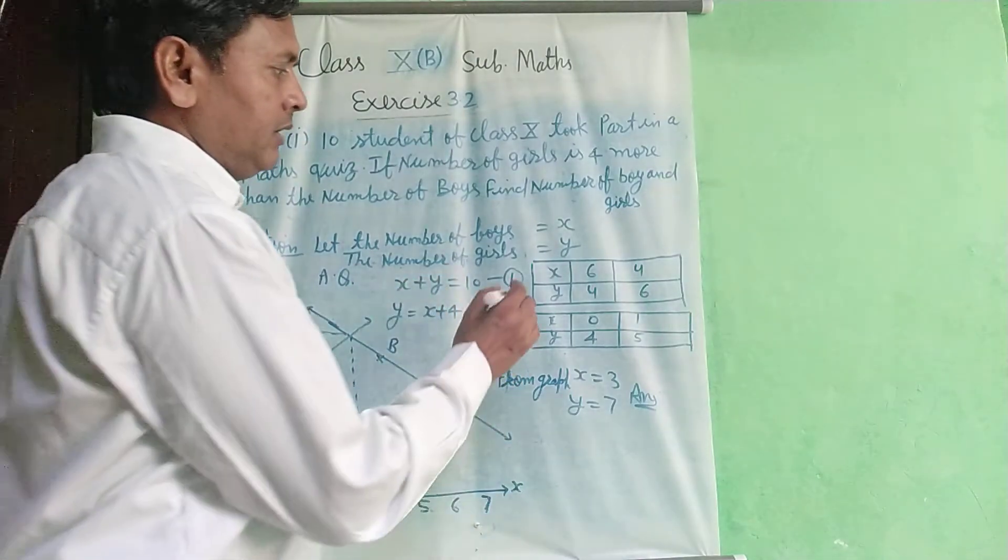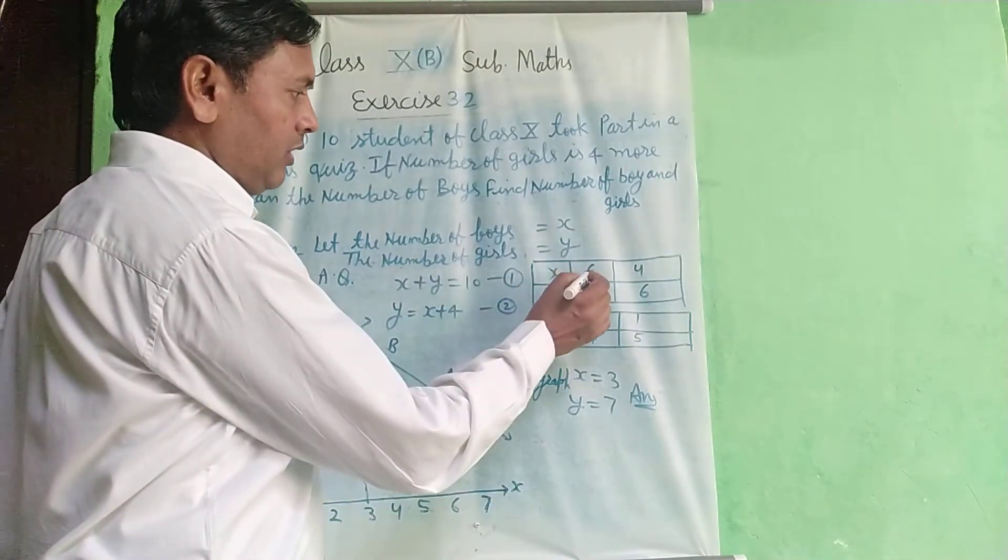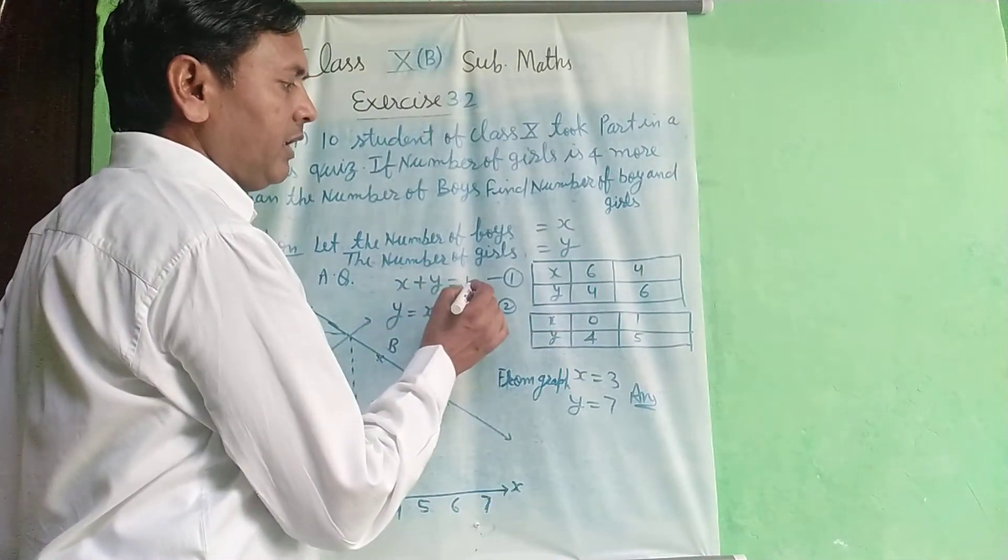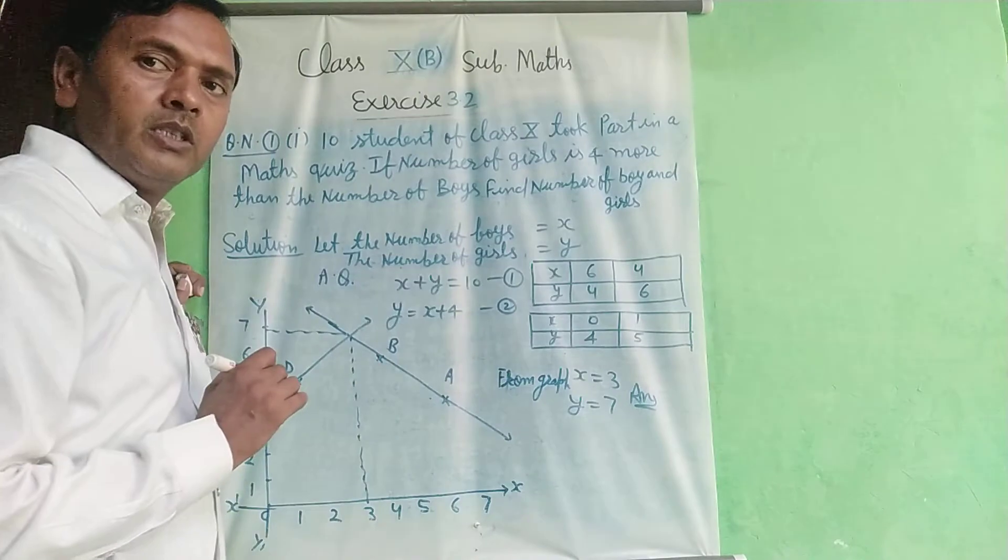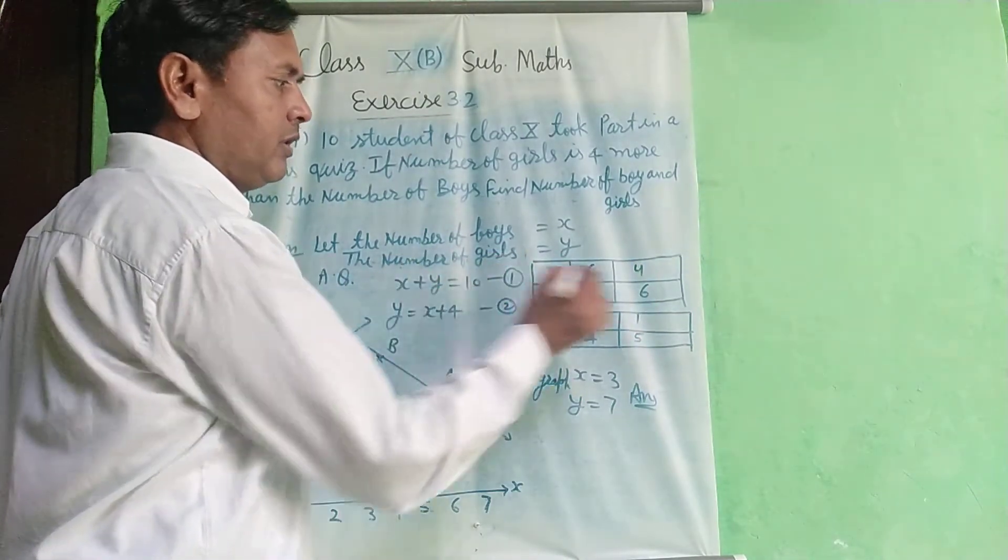From the graph, make a table with the help of first equation. Put x is equal to 6, 10 minus 6 is equal to 4. Put x is equal to 4, so 10 minus 4 is equal to 6.